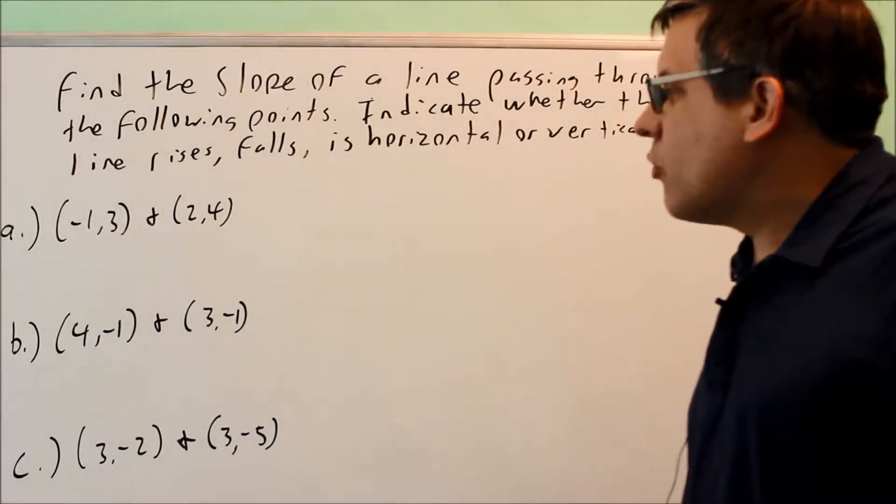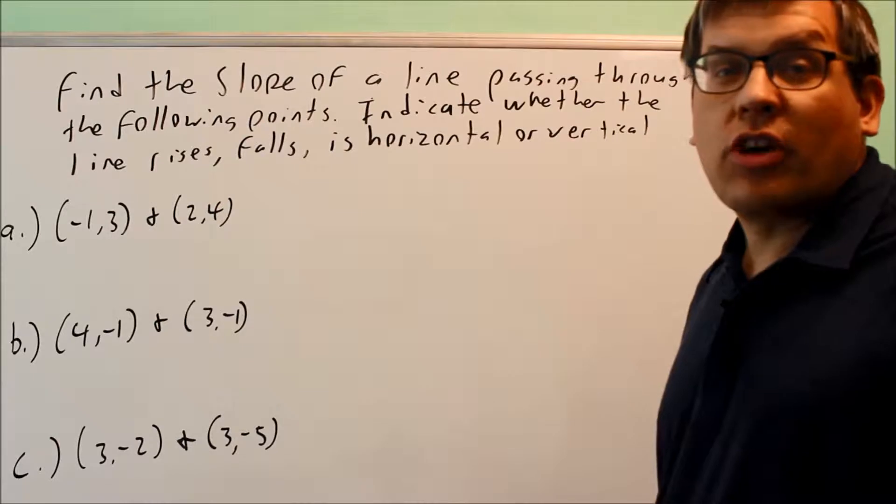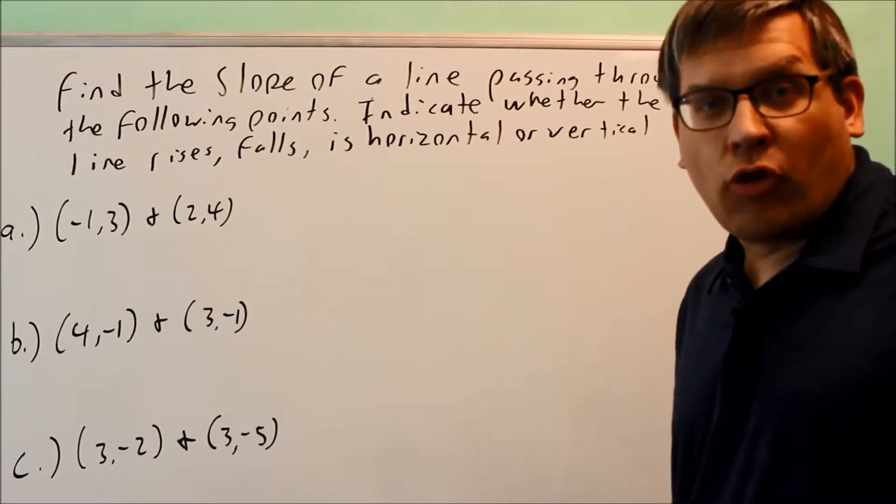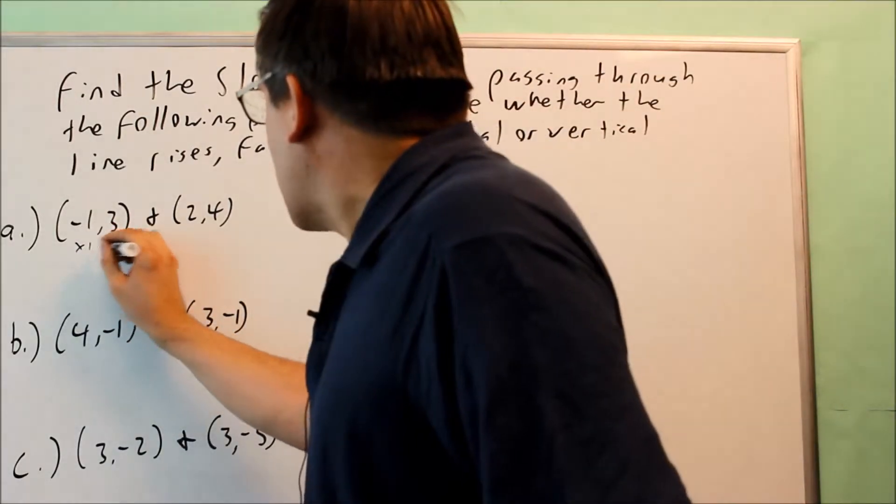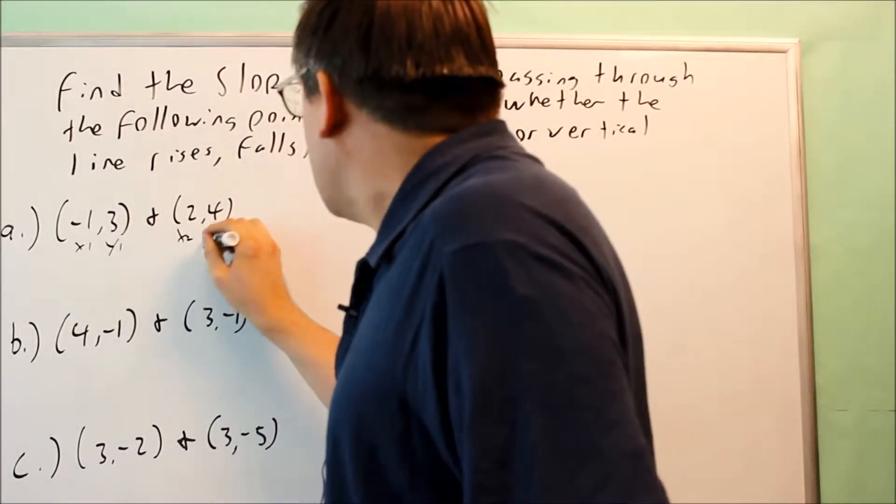So here's the first set of points, negative 1, 3, and 2, 4. In order to find the slope, we want to use the slope formula. That's the change in y over the change in x. So for this, I'm going to label this as x1, y1, x2, y2.